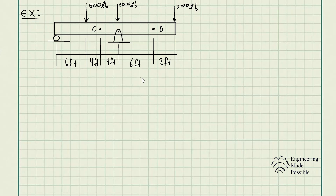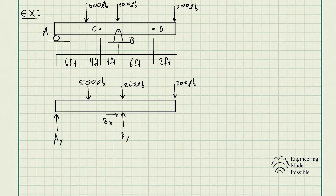The first step is always to find the support reactions. We start by drawing the free-body diagram with the reactions at each support. At point B, we have a hinge, so we have force components along both the X and Y directions. At point A, we have a roller, so we just have a normal force, AY.